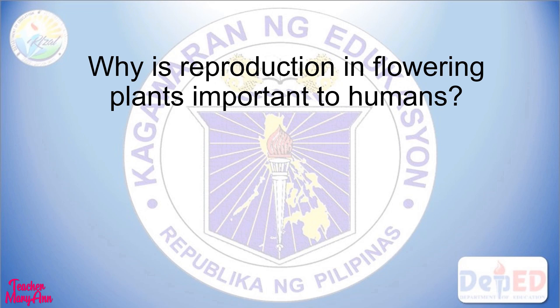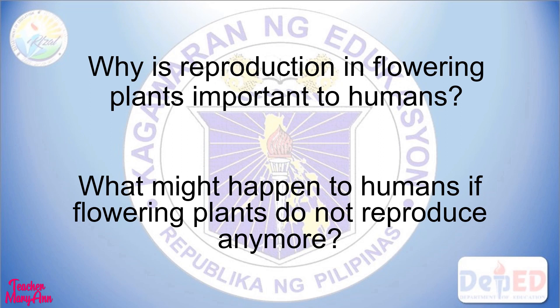Why is reproduction in flowering plants important to humans? Reproduction in flowering plants is very important not only to humans but also to other animals. Just imagine the world without these flowering plants — it's merely a dull world. They serve as the major source of food for humans and animals. They provide natural medicines and a lot more. If reproduction doesn't take place, their kinds will not exist anymore and we cannot see these flowering plants around.